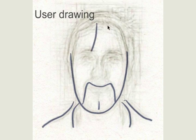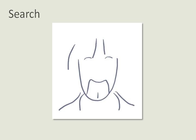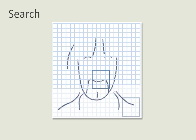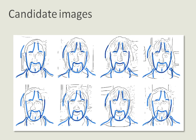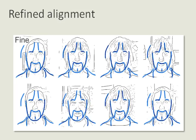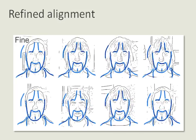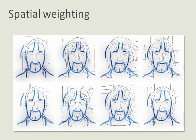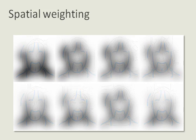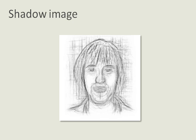As a user draws, the partial matching is dynamically analyzed by examining each sub-window. The edges in each sub-window are matched against the images in the database. The best matching edge images are then further aligned. Blending weights based on the match are then used to composite the edge images to create the final shadow image.